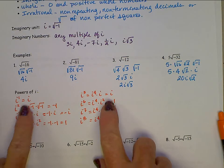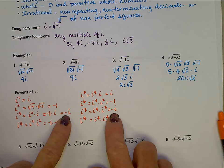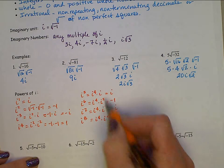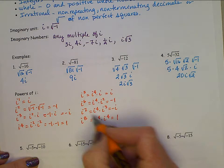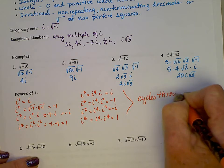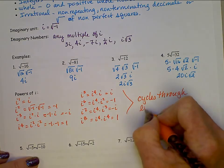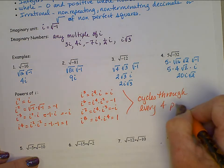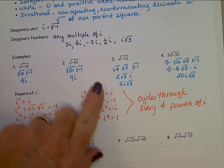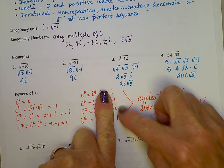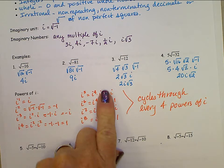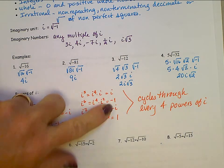This pattern repeats — it cycles through this list every 4 powers. A memory trick: 'I won, I won' — like you win a race — and the middle two are negative. That can help you remember the order: i, negative 1, negative i, 1.